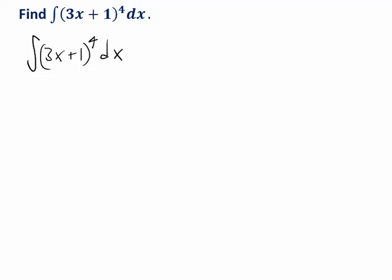An easier way is to introduce a new variable to represent the quantity inside parentheses here. I'm going to let s represent 3x plus 1. That's this stuff here. So then my integral becomes s to the 4th, but I also have to change this dx at the end of the integral.